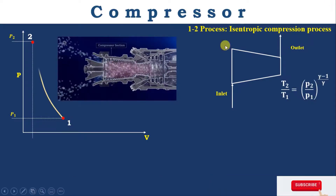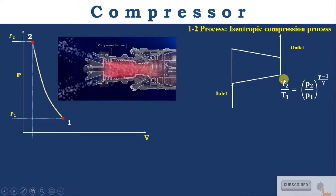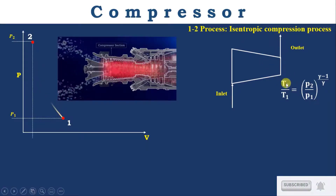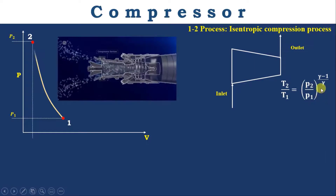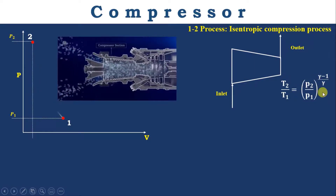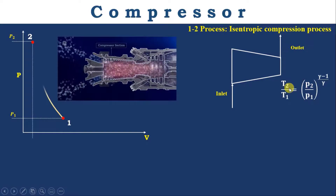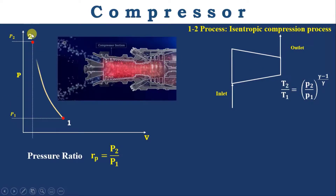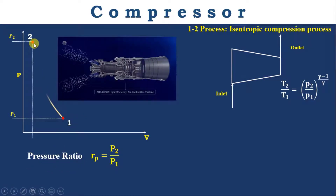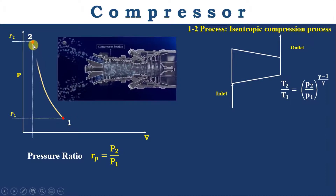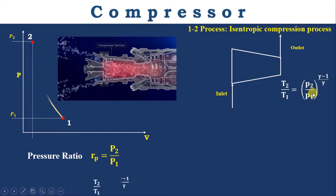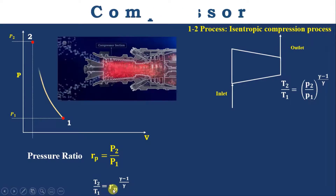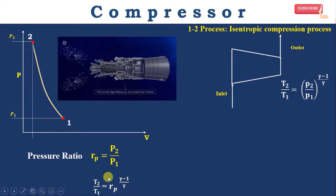From the isentropic relation, if we know T1, P2, and P1, we can find T2. That is: T2 / T1 = (P2 / P1)^((γ−1)/γ). This is the isentropic relation. During the compression process, we talk about the pressure ratio Rp, which is the ratio of maximum to minimum pressure. Substituting Rp gives: T2 / T1 = Rp^((γ−1)/γ).